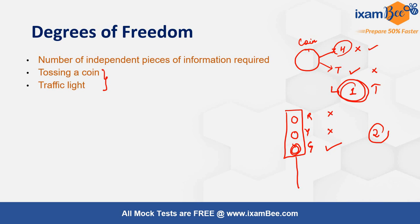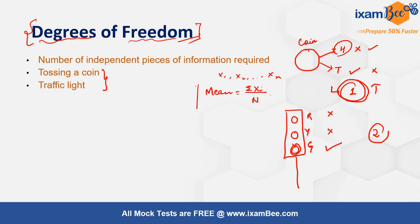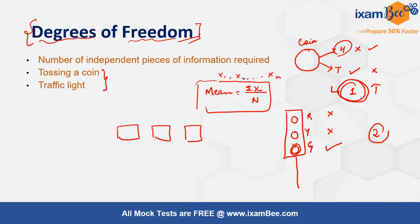In econometrics and statistics, this concept is widely used. For example, suppose you have to calculate the mean of a data series x1, x2, ..., xn. You sum all the values and divide by the total number of observations. To find the mean, you need to know all the values — even if one is missing, you cannot find it. Hence, all variables are free to vary, and you need information about all of them.